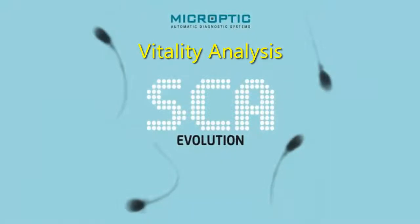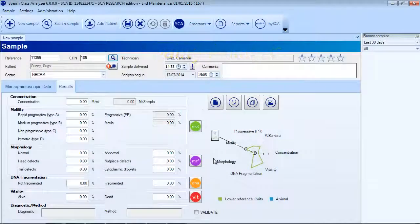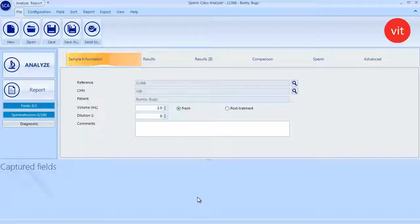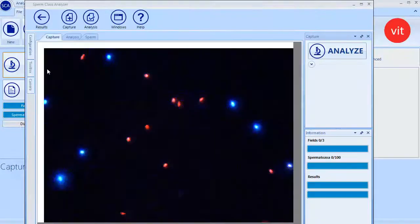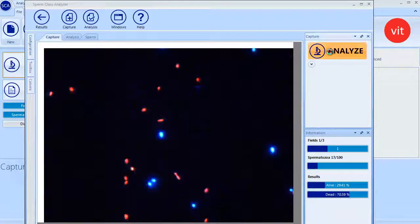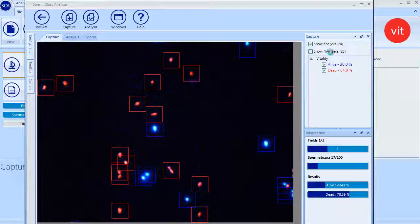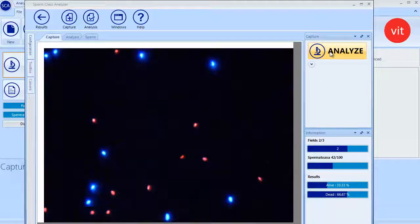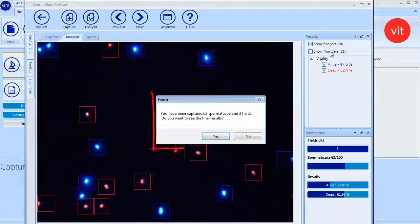Vitality analysis. Access the analysis module from the respective button in the results tab or from the icons bar. This is the main analysis window where sample information is presented. Press Analyze button to display the live image. Focus the field and analyze it by clicking the Analyze button again. Fields are captured and analyzed automatically.